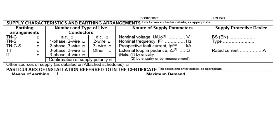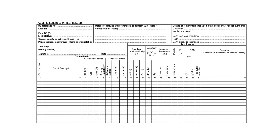I'll just show you where it goes on the electrical installation certificate — either on page one or page two, depending on which certificate you're using. You can see a little tick box: confirmation of supply polarity. As we've just proven it with that previous test, we can put a little tick in the box there. There's also a box on the schedule of test results in the top left-hand corner. Once you've confirmed supply polarity, we can put a tick in that box as well to confirm that the supply polarity is correct.